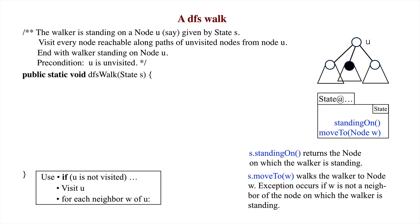We now develop the method body from the specification. First, let's save the node on which the walker is standing in a local variable u and visit u, since the spec says it's unvisited.